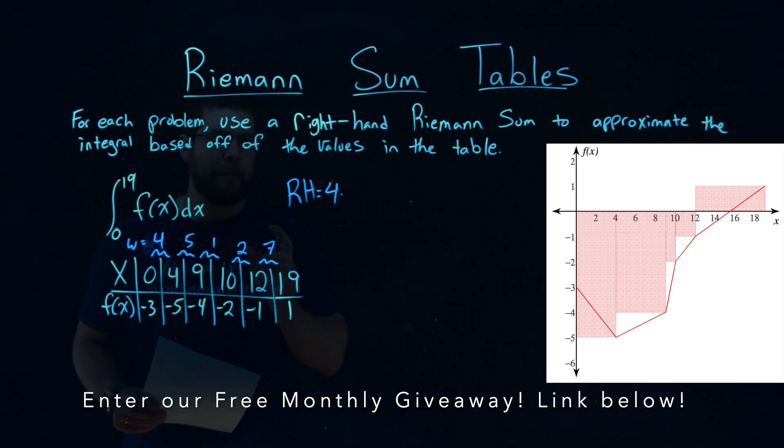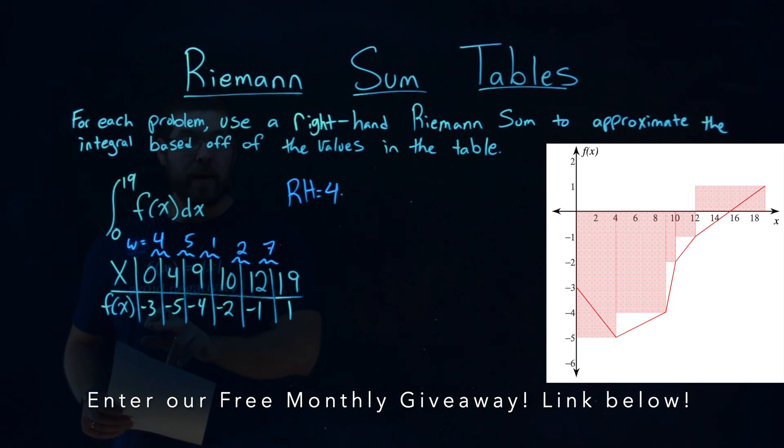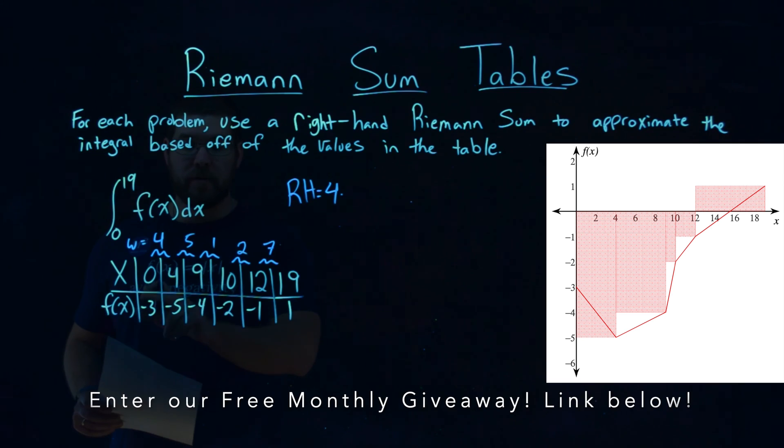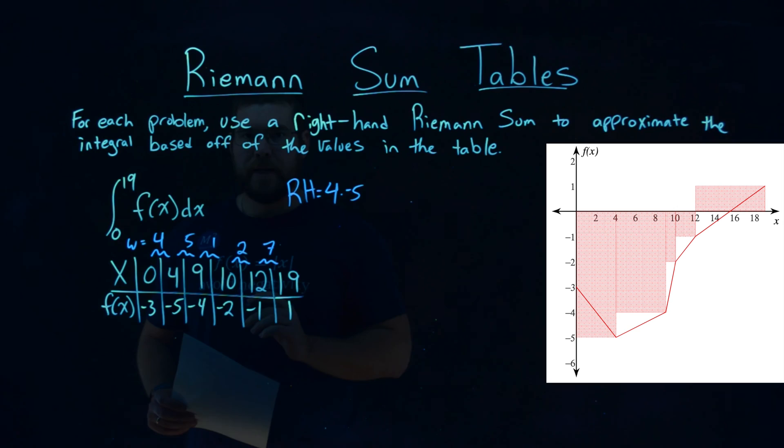and multiply it by the right part of that rectangle, its height. So the height of the right part of the rectangle refers to f(x), and the right part is negative 5. So we have negative 5 being multiplied here.